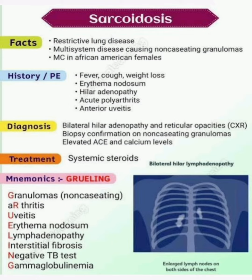Now the presentations. In sarcoidosis, a patient may present with fever, cough, weight loss, erythema nodosum, hilar adenopathy, polyarthritis, and anterior uveitis.